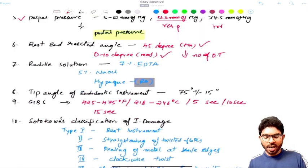Next one is tip angle in endo. Tip angle in endo is 75 degrees plus or minus 15 degrees.